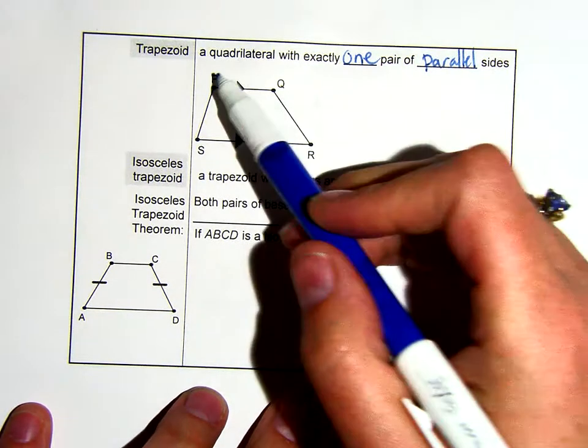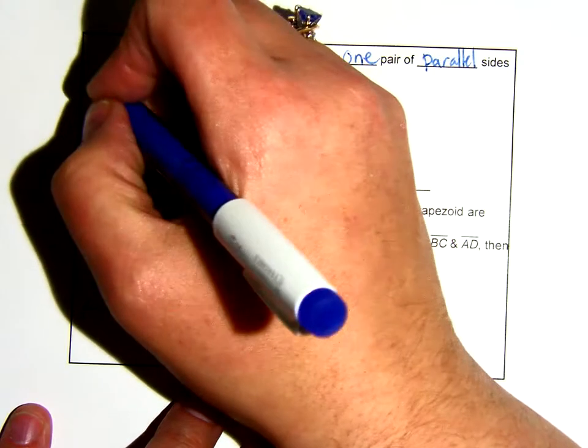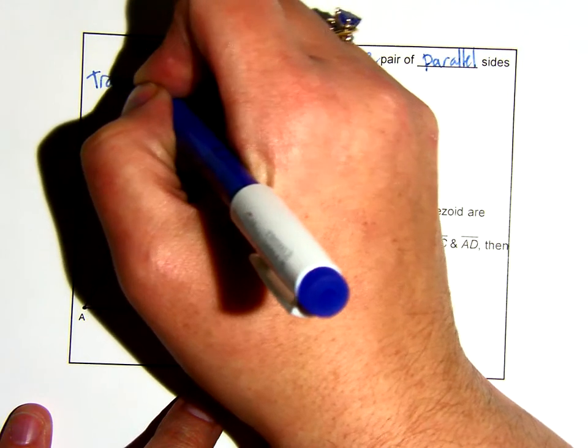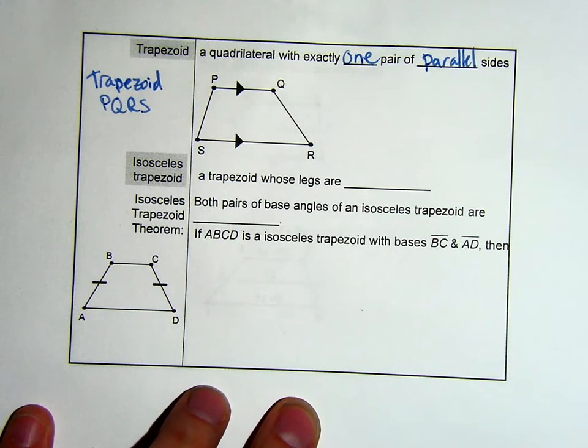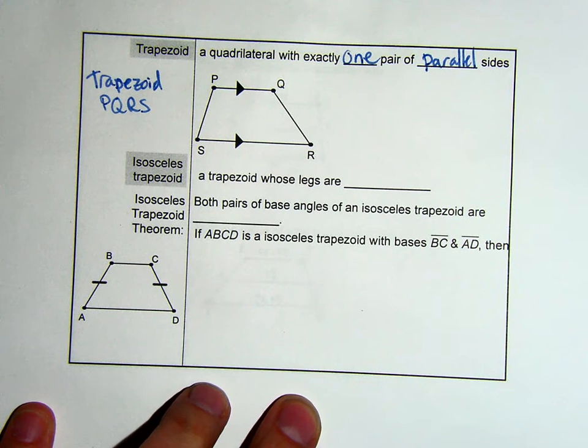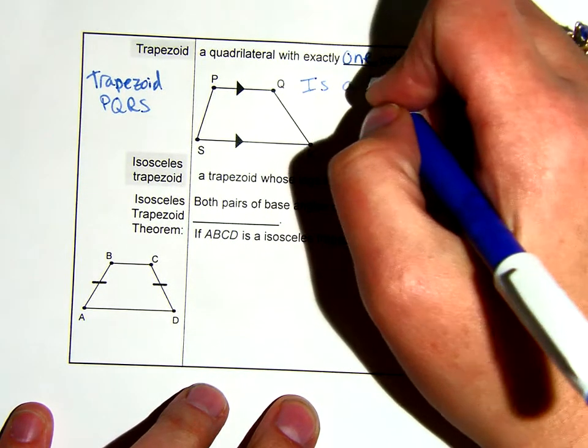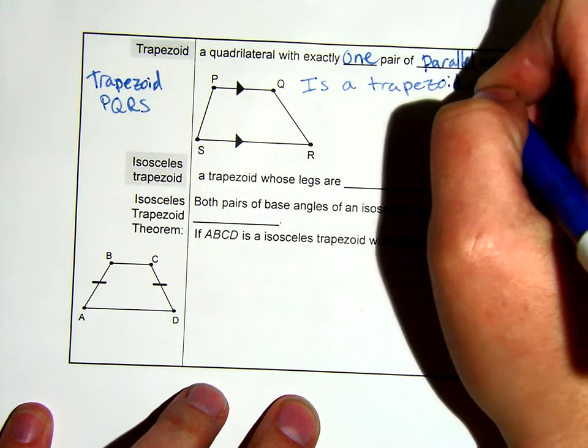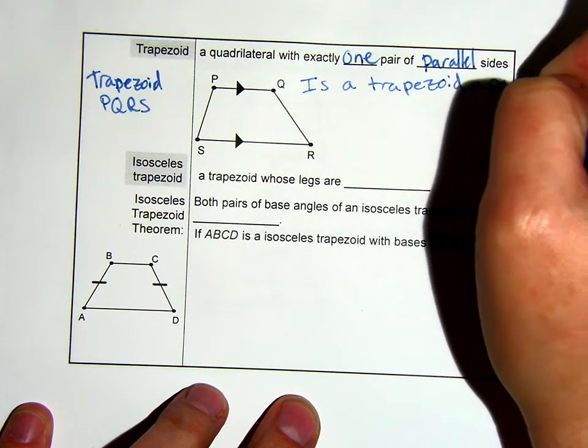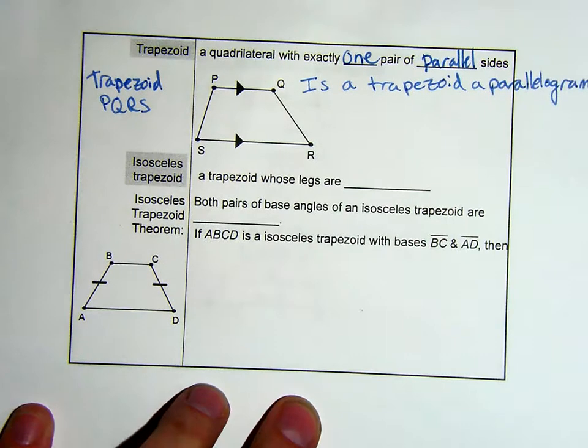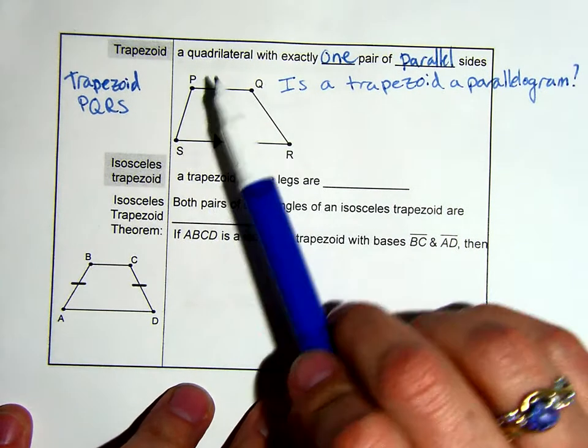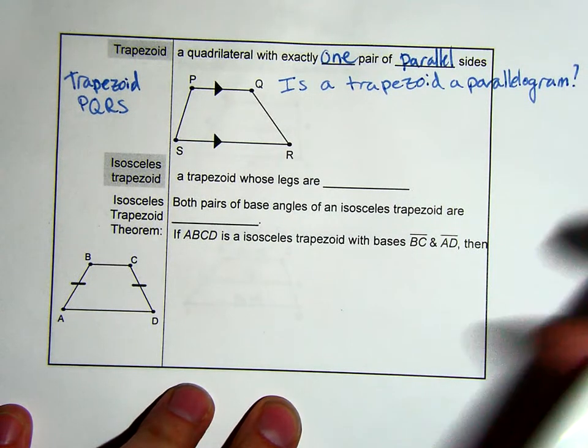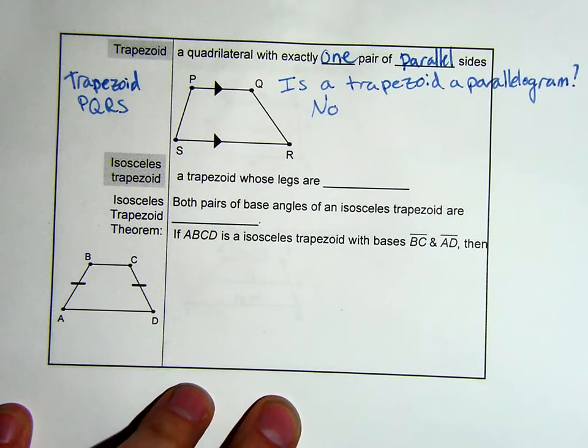For example, PQRS is a trapezoid. So we call it trapezoid PQRS. Does this mean that a trapezoid is a parallelogram? Since the trapezoid has only one pair and parallelograms have to have two pairs of opposite sides being parallel, the answer is no, a trapezoid is not a parallelogram.